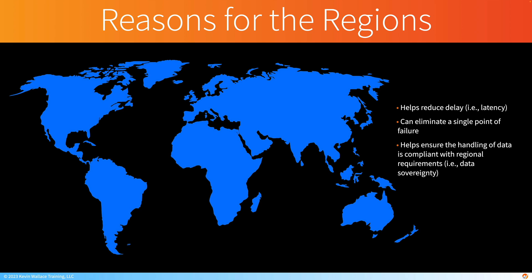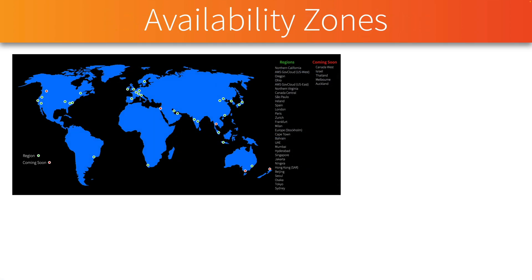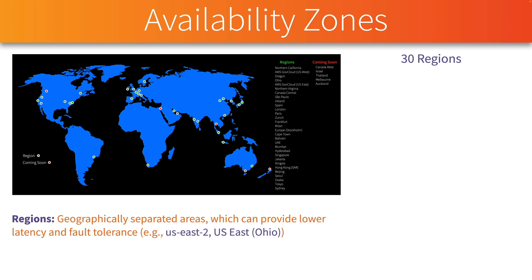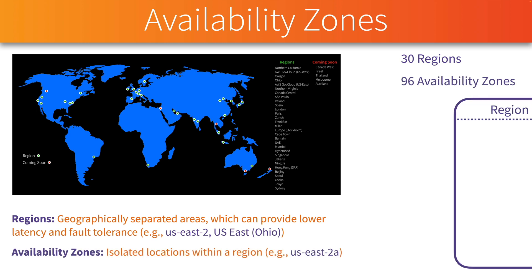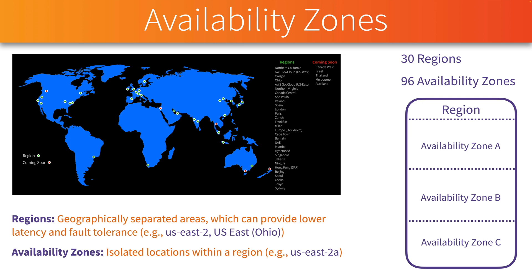A region is not just one data center — it defines geographically separate areas, and by deploying resources in a region close to your customers, you can reduce latency. At the time of this recording, AWS Cloud has 30 regions and 96 availability zones. Every region has at least two availability zones, sometimes more. These are isolated locations within a region, so if availability zone A becomes unavailable, backup resources in availability zone B in that same region allow you to fail over.